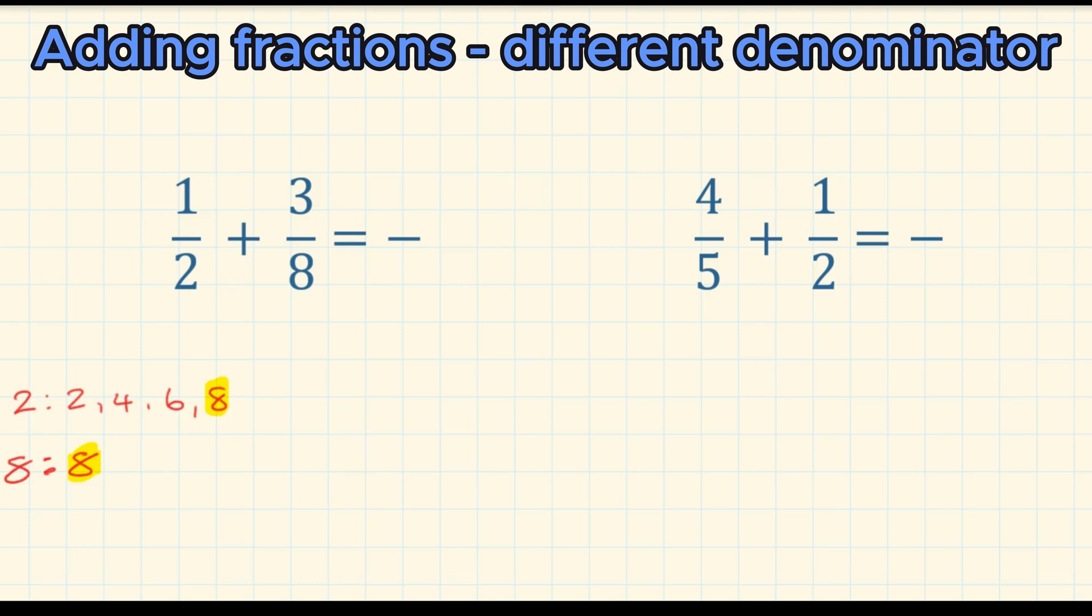Once we've found the lowest common multiple, we need to rewrite the fractions, or write equivalent fractions where both denominators are eight. So looking at the first one, to turn two into eight, we multiply it by four, and just remember to do the same to the top. So now we have our new fraction, four over eight. If we look at the next fraction, three over eight, that's already over eight, so we don't need to do anything.